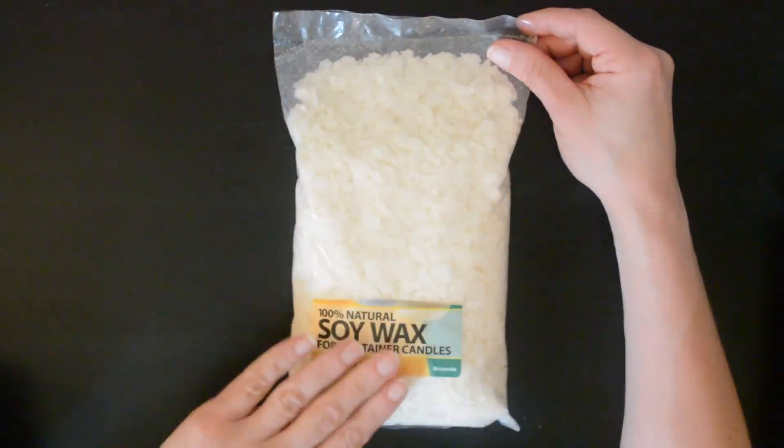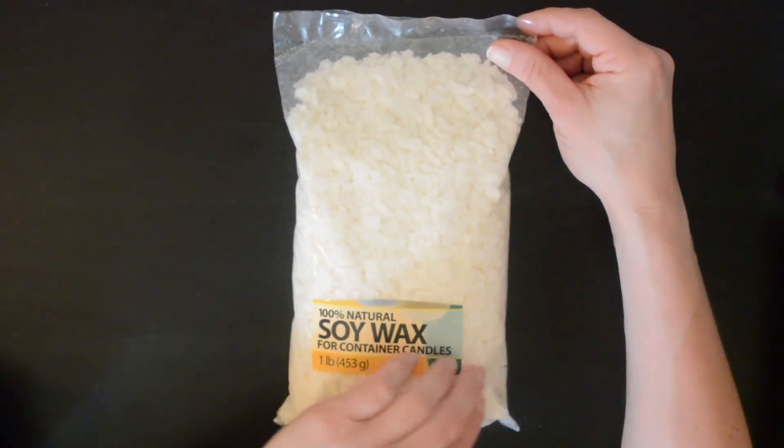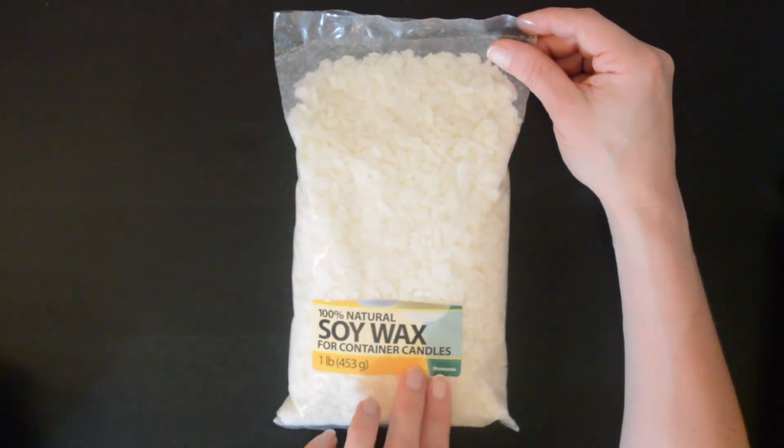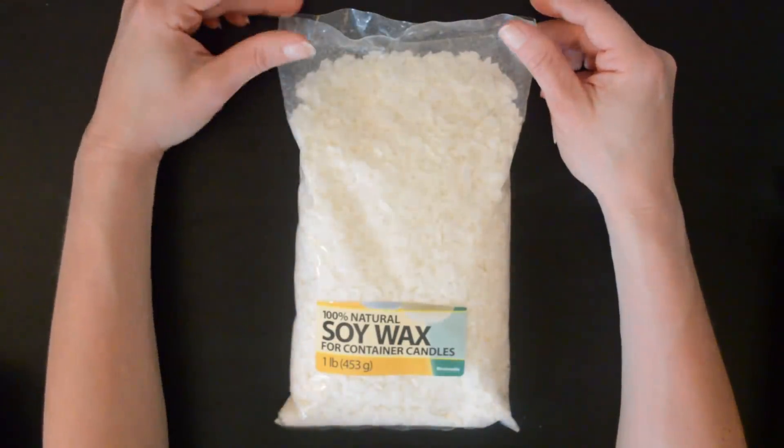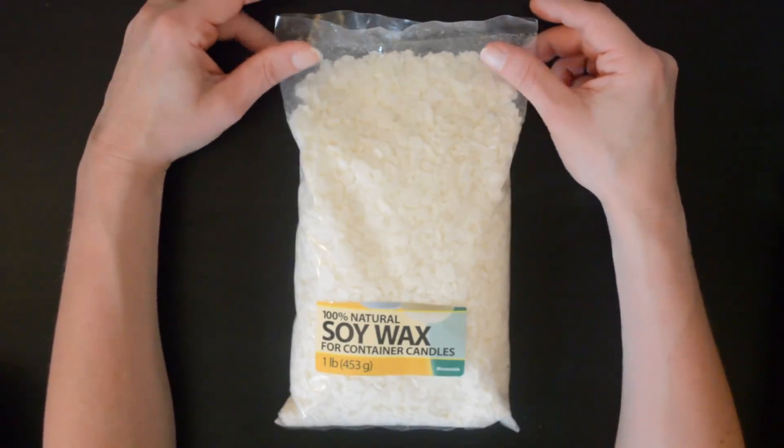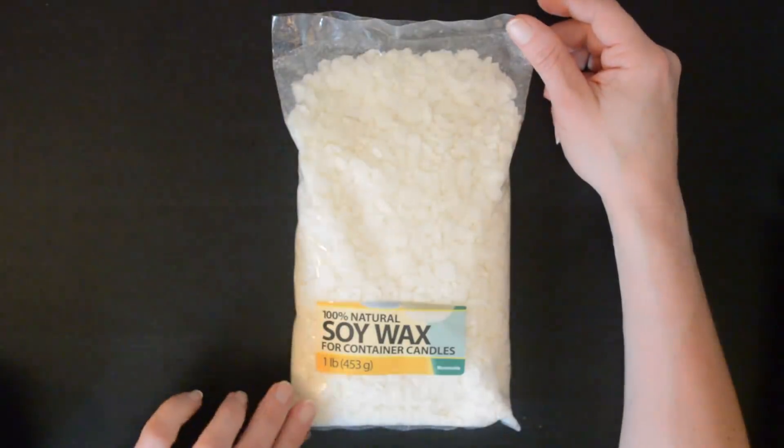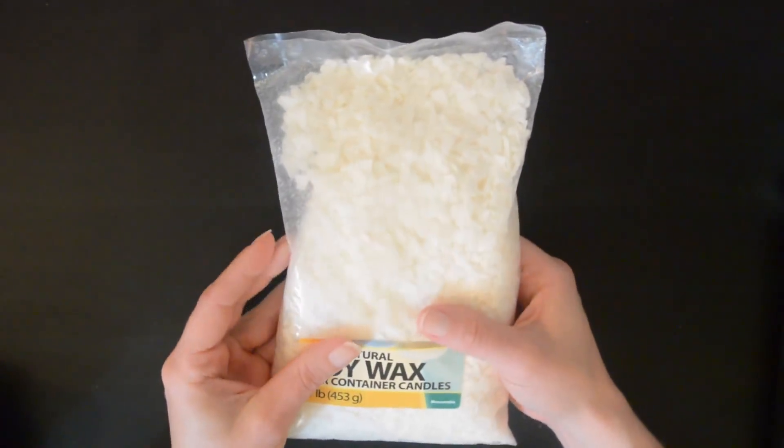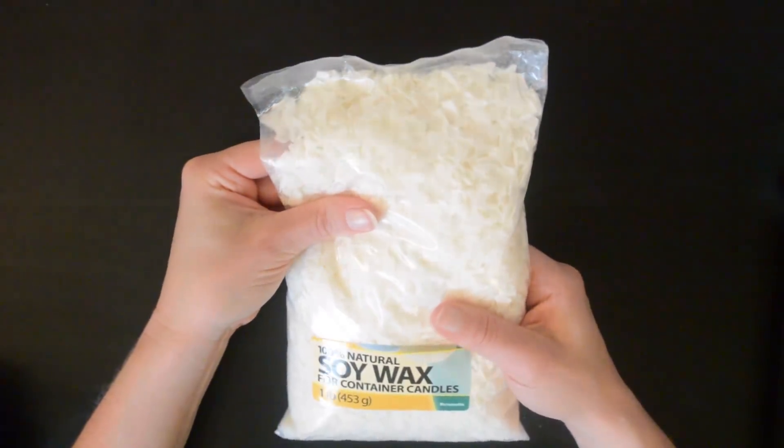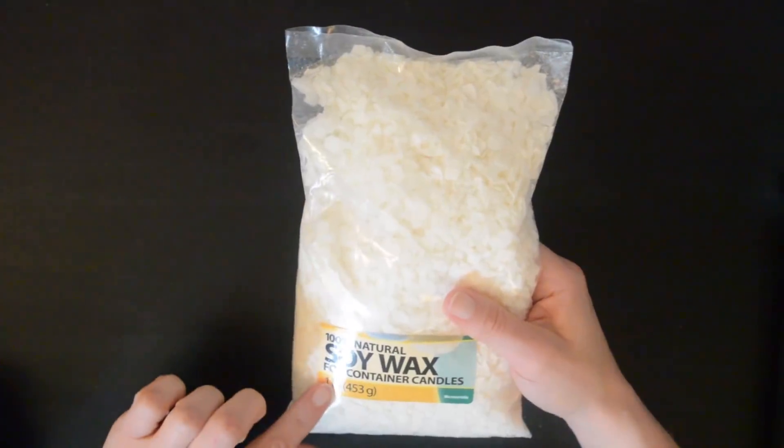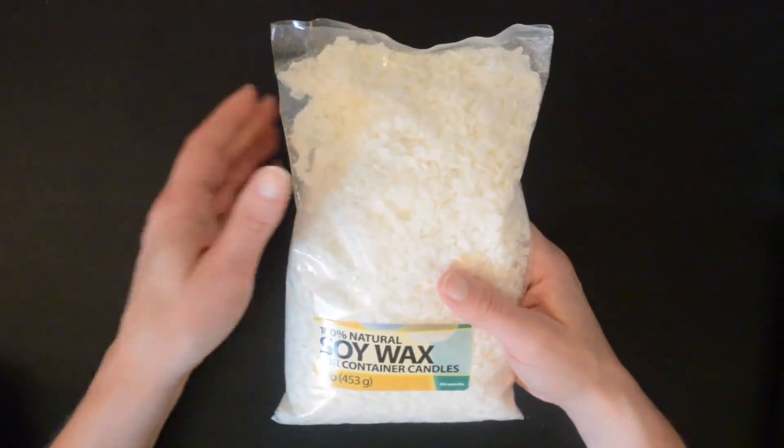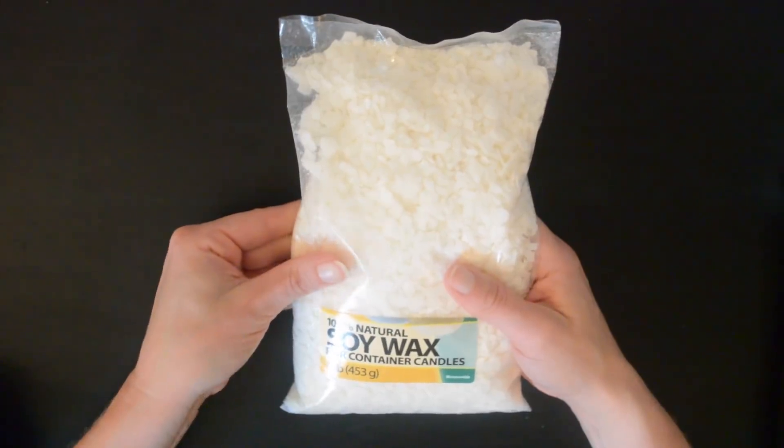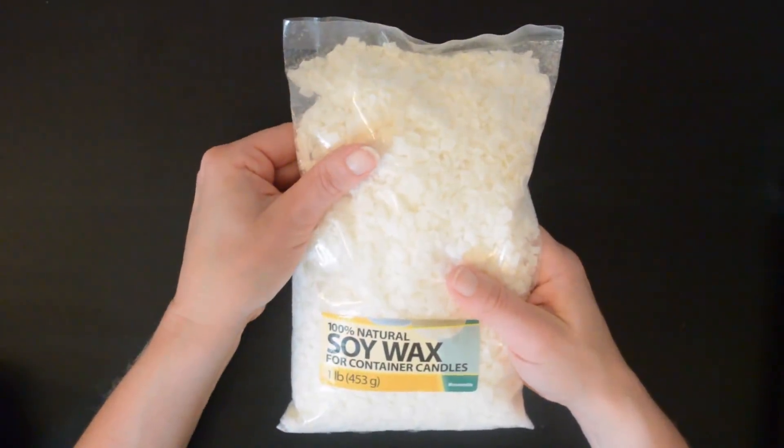The first thing that we'll need is some wax. Now this is natural soy wax and it's microwavable. It makes it very easy to make these candles. So this is soy wax chips. And this is a one pound bag. I'm not planning to make a very large candle, so I don't need too much wax. I hope I have enough.